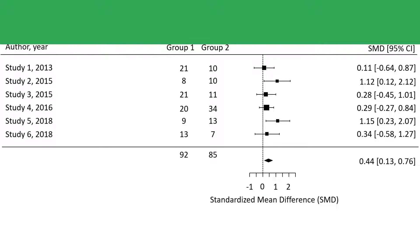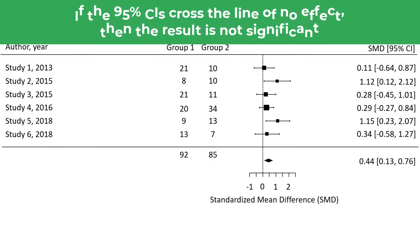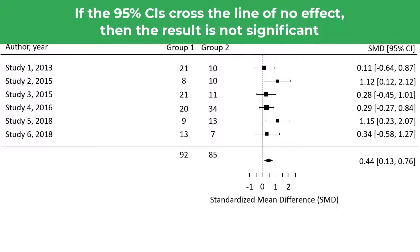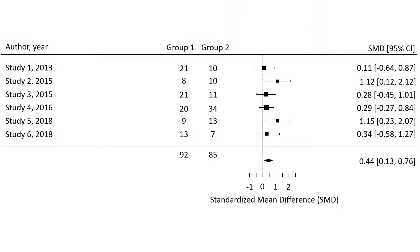So what is the actual point of this line? It's actually really useful when interpreting the results. If the 95% confidence intervals of the individual studies, as well as the pooled result, overlap with the line of no effect, then the results are not significant — in other words, the p-value is greater than 0.05. I can easily see that the confidence intervals for studies 1, 3, 4, and 6 cross the line of no effect, so these studies individually were not significant.